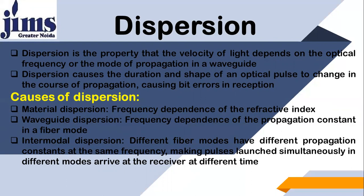This is the general formula that has a relation between velocity and wavelength. Obviously the inverse of wavelength is frequency, so there is a straightforward relationship between velocity and frequency. Dispersion causes the duration and shape of an optical pulse to change in the course of propagation, causing bit errors in reception.